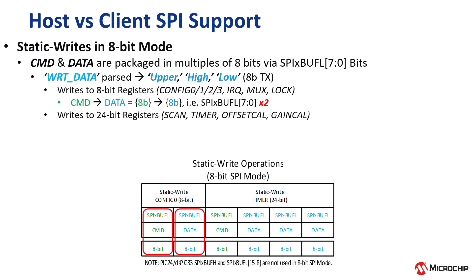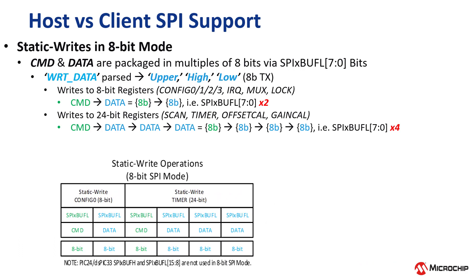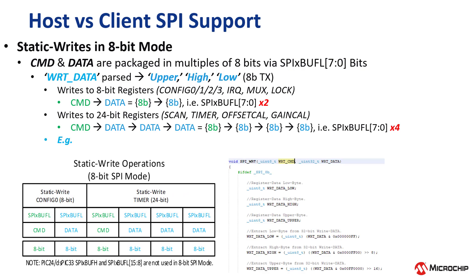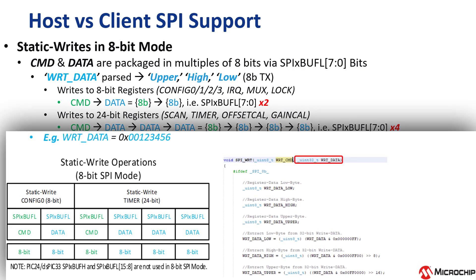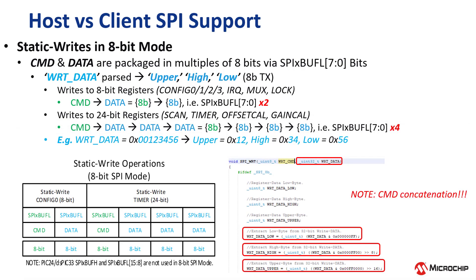Static write operations to 8-bit registers are achieved by sending the command and data in two sequential 8-bit packets via the SPIBuff L[7:0] bits. Similarly, static write operations to 24-bit registers are achieved by sending command and data in four sequential 8-bit packets via the SPIBuff L[7:0] bits. It should also be noted that since all MCP-3X6X commands are 8-bits in depth, there is no need for parsing or concatenation since all transmissions in 8-bit SPI mode are also 8-bits in depth.